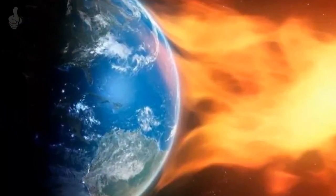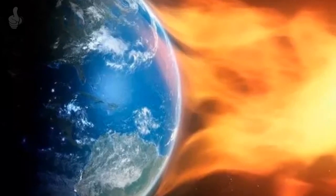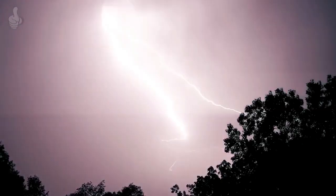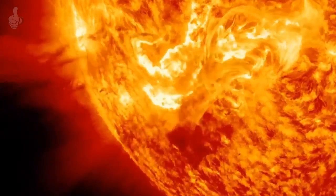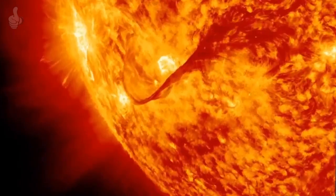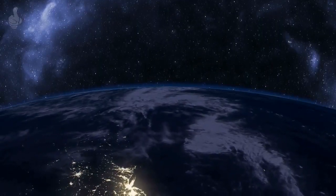The last big solar storm occurred in 1989, when a serious power outage occurred in Quebec, Canada. In 2012, another major storm triggered by a large coronal mass ejection (CME) from the sun almost missed our planet.